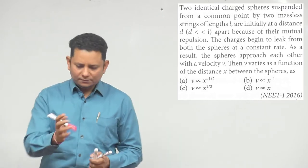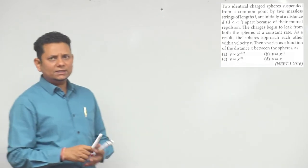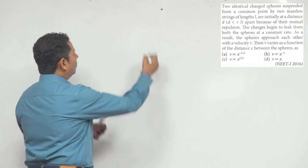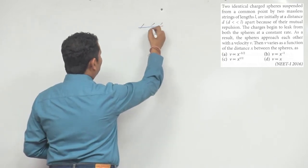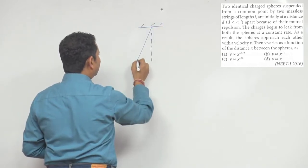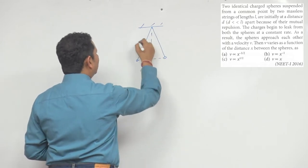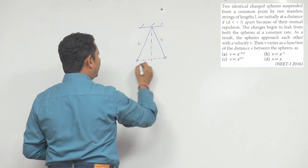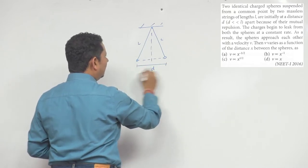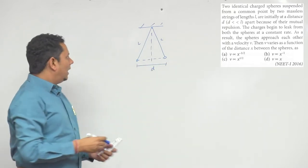Now the first situation to understand: there are two charges, you've given them positive charge, and due to mutual repulsion they are separated. The length l is here, and the total distance from here to here is d. Now the charge from both is leaking.